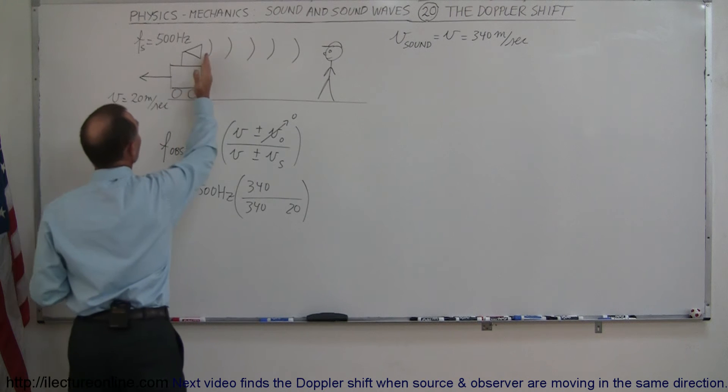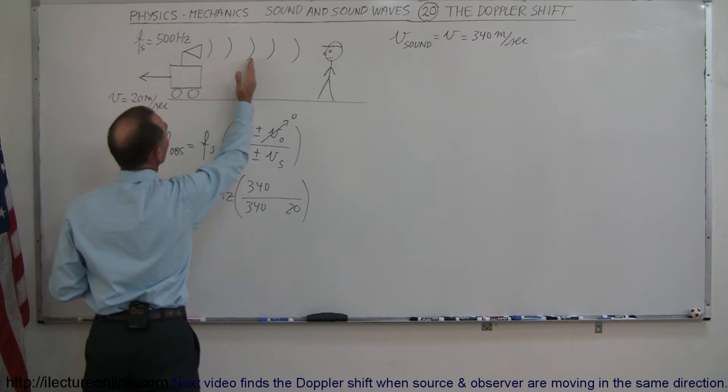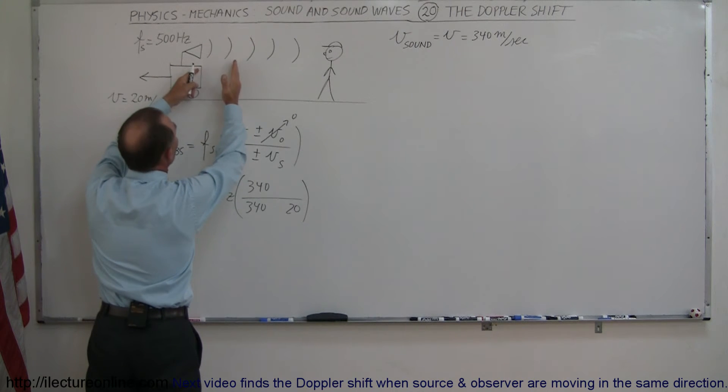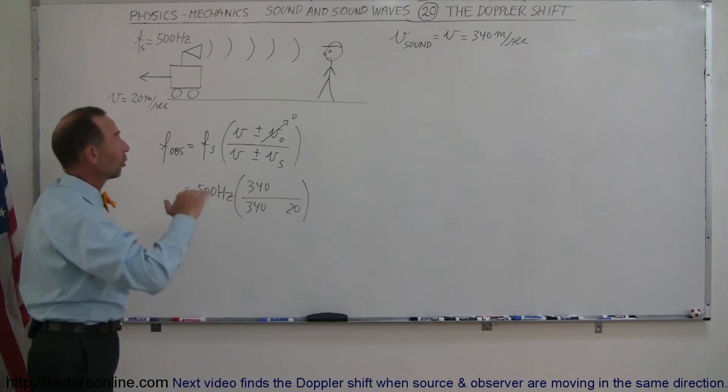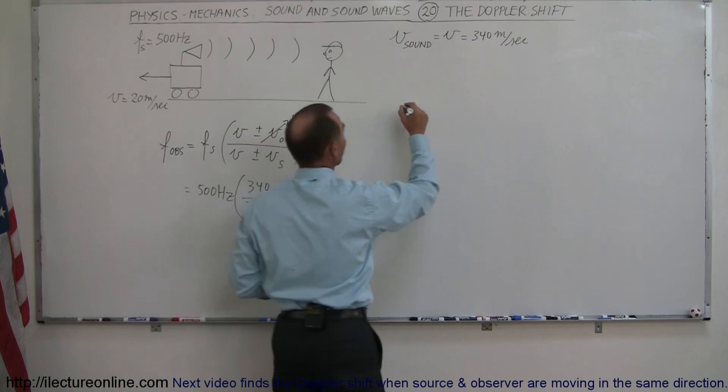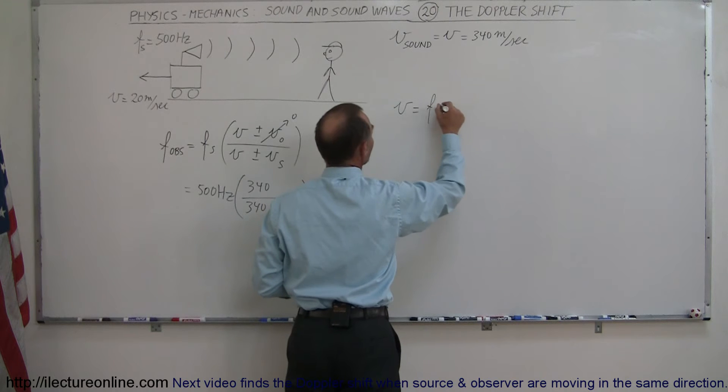The source is moving away from the observer. That means every time a new wave is being put out, the waves will be farther apart, which means longer wavelengths, which means lower frequency. Again, remember, velocity equals frequency times wavelength.